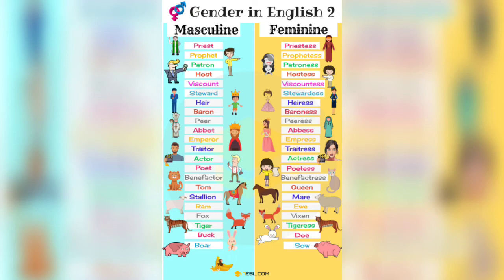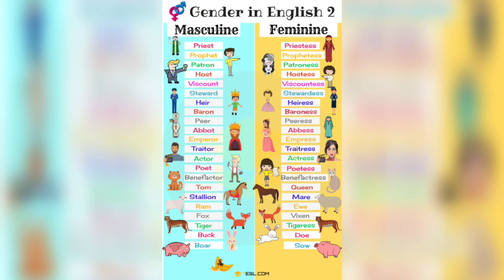More examples: priest — priestess, prophet — prophetess (one who tells about the future), patron — patroness, host — hostess, viscount — viscountess, steward — stewardess, heir — heiress, baron — baroness, peer — peeress, abbot — abbess, emperor — empress, traitor — traitress, actor — actress, poet — poetess, benefactor — benefactress, fox — vixen, tiger — tigress.